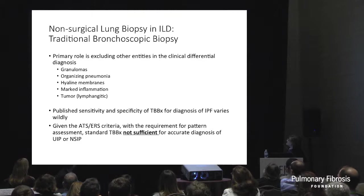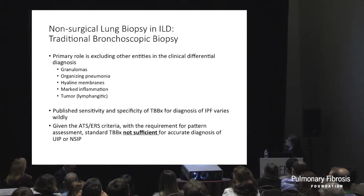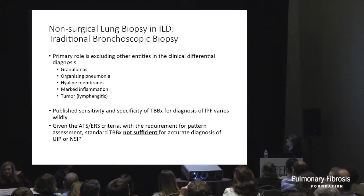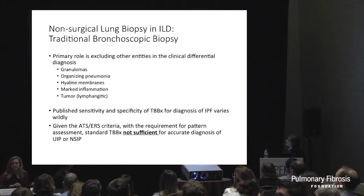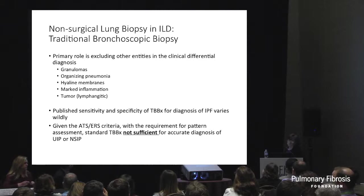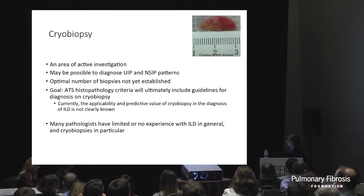Regarding nonsurgical lung biopsy: we've talked about what we look for on transbronchial biopsy, which I'm still seeing routinely at Vanderbilt. But the published sensitivity for establishing a diagnosis of IPF is as low as 10%, with one paper as high as 30%. I conclude that transbronchial biopsy is really not a sufficient modality for accurate diagnosis of UIP or NSIP.